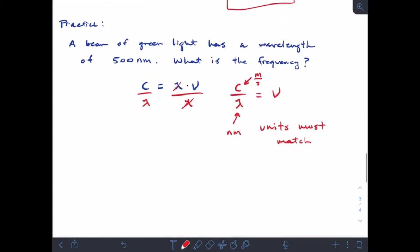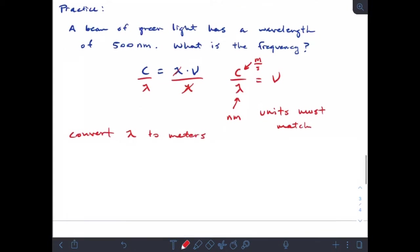The first thing I'm going to do is convert λ to meters. Our conversion: 1 nanometer equals 10 to the minus 9 meters. So 500 nanometers, I'm going to put nanometers on the bottom because I want that to go away, and 10 to the minus 9 meters on top. My nanometers will cancel, so this equals 500 times 10 to the minus 9 meters, or in correct scientific notation, 5.00 times 10 to the minus 7 meters.